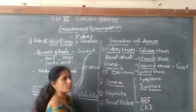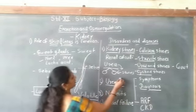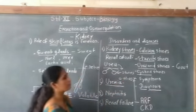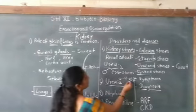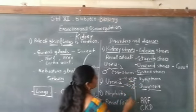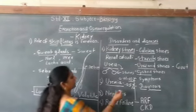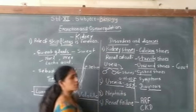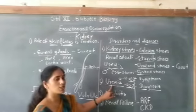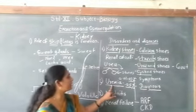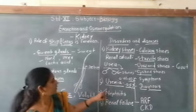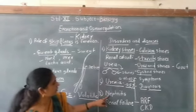Uremia means the presence of excess urea in the blood. Normally 0.01 to 0.03 percent urea is present in blood, but when it rises above 0.05 percent, the condition is called uremia. The definition: a large amount of urea present in blood, or an increased concentration of urea in blood, is called uremia. Uremia can also lead to kidney failure.